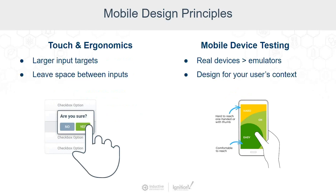We're using our fingers as opposed to mouse and keyboard, which is much more precise. You also want to leave some space between your inputs to eliminate the errors that happen with touch inputs sometimes. Testing your designs on real mobile devices, as opposed to emulators, is important — really focus on your user's context and ideally test on the devices they're actually using, if possible.